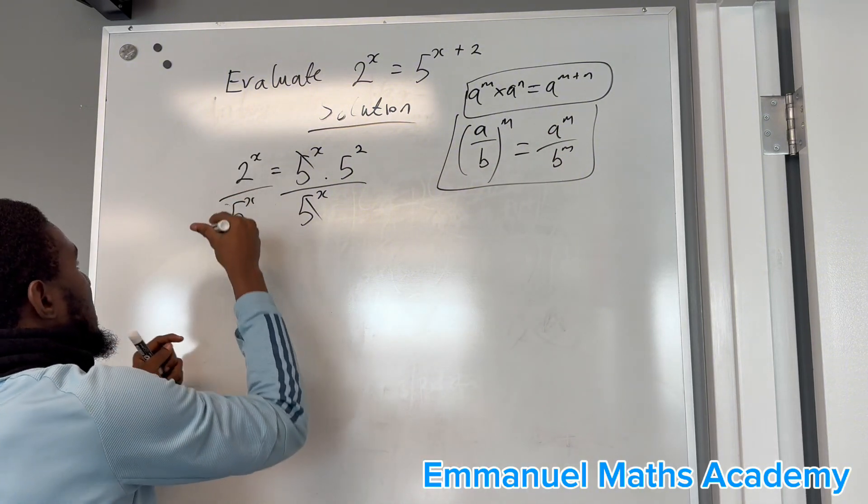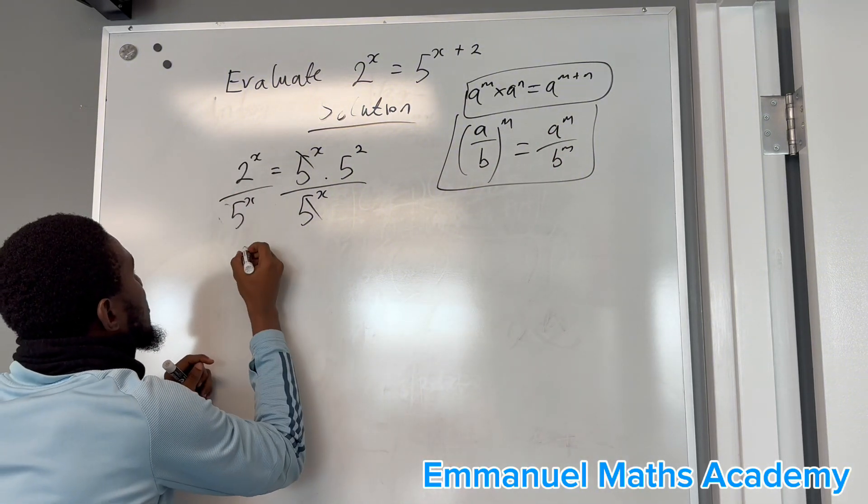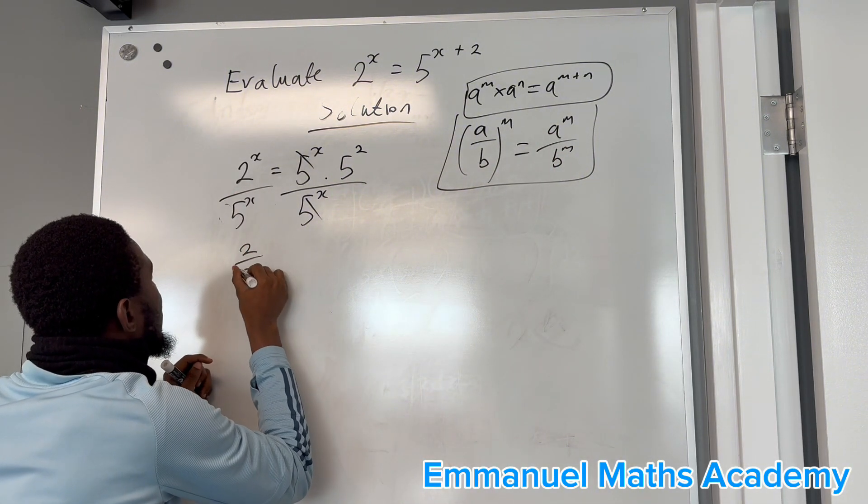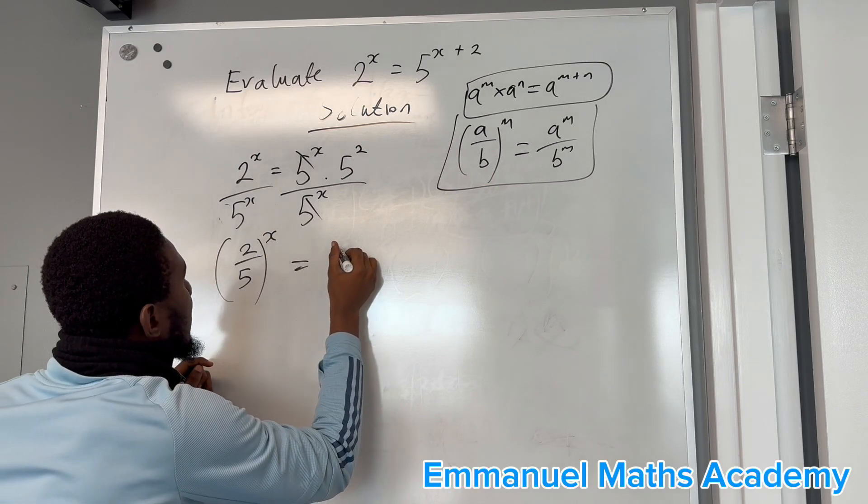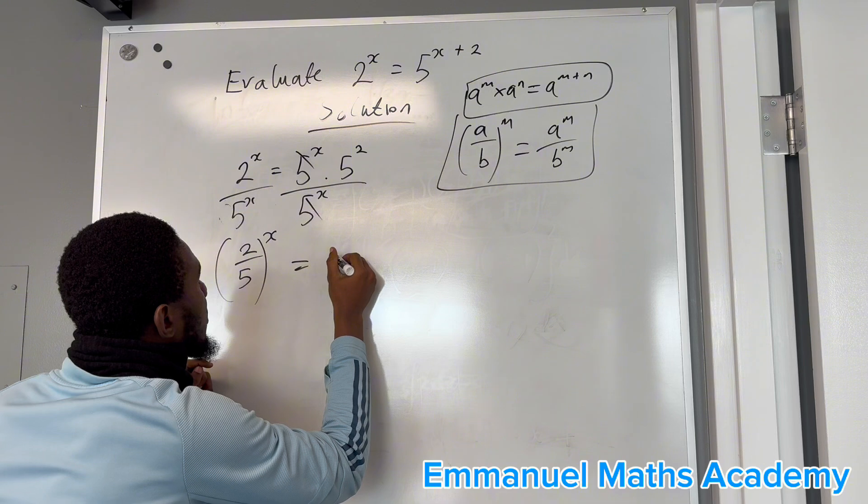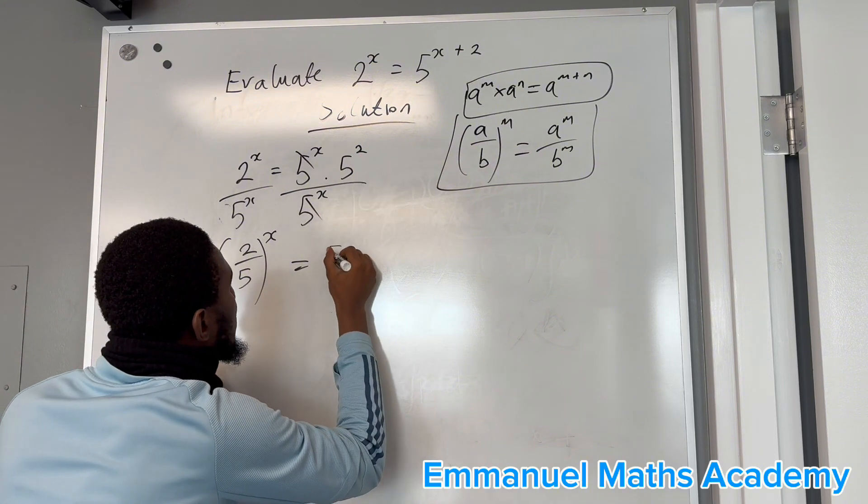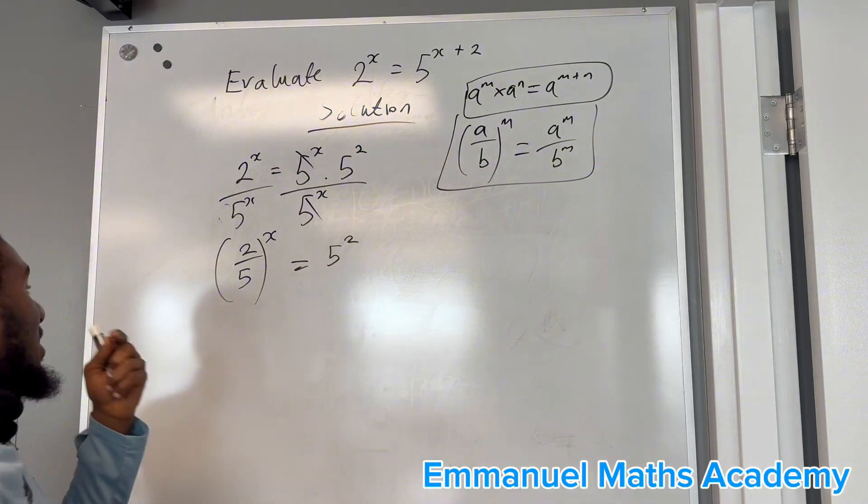So applying this, you see that this equals 2 over 5 power x, which equals 5 power 2.